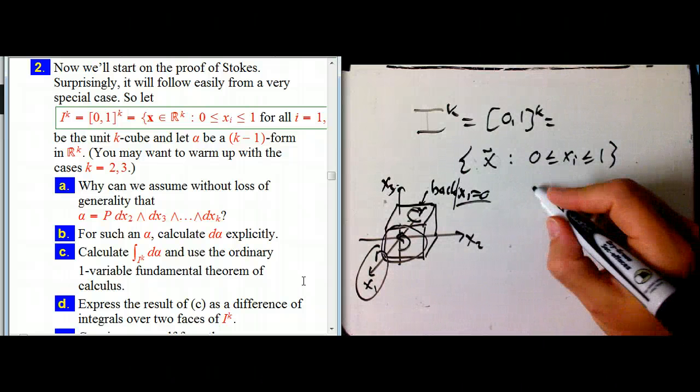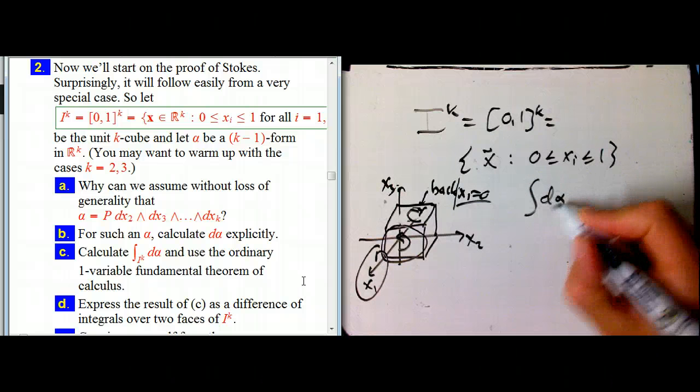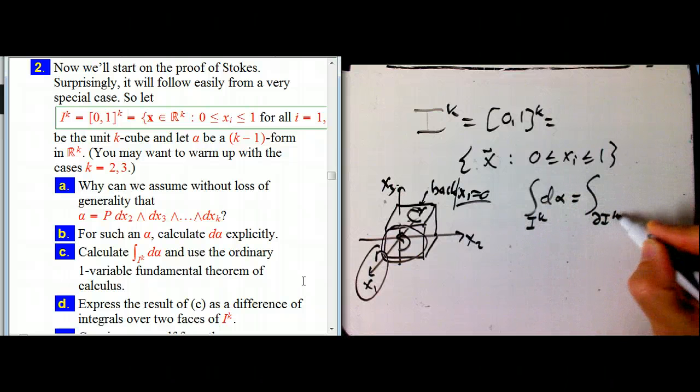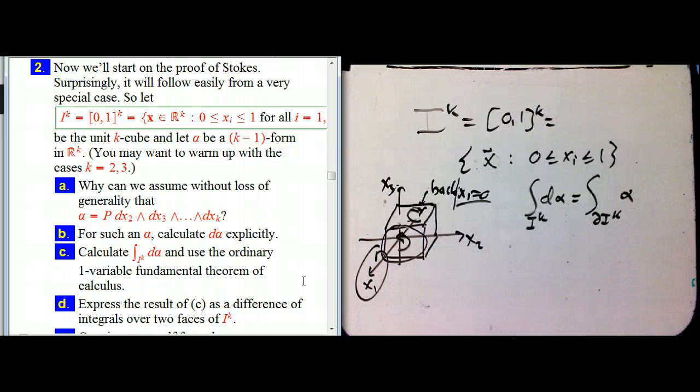We want to show, of course, that the integral of d alpha over the whole unit cube is the integral over the boundary of the unit cube of alpha itself. Now in general, alpha is going to be.